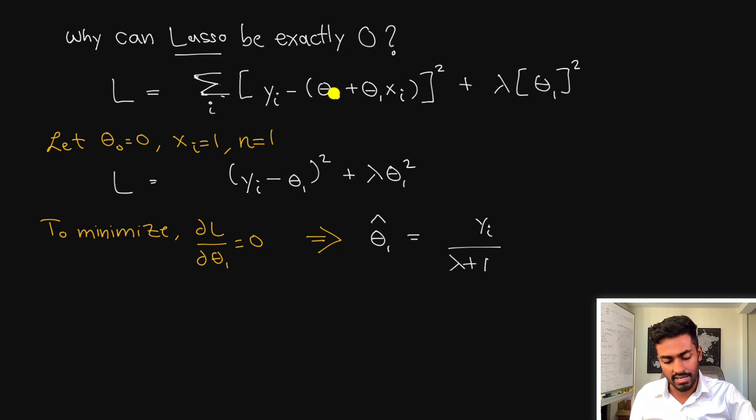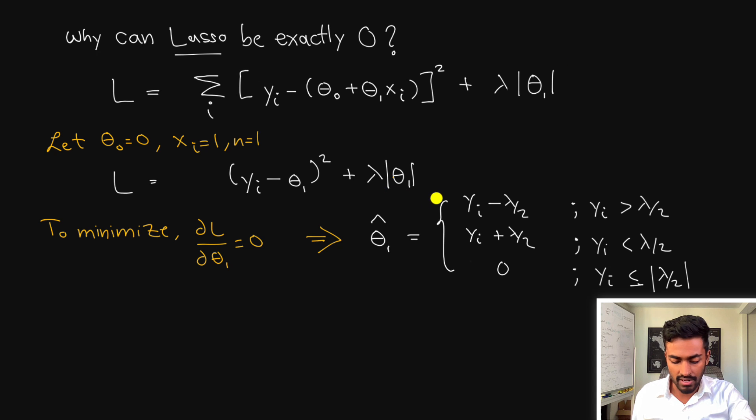So first let theta zero be equal to zero so that means that there's no intercept term. Let's also consider only one example where n is equal to one and also the feature value that we're injecting is just one and so now the ridge regression equation bubbles down to just this form. And in order to minimize this as we would with the residual sum of squares we take the derivative of theta 1 with respect to zero and then we find that theta 1 actually has this nice little form which is a very simplistic form that shows a line.